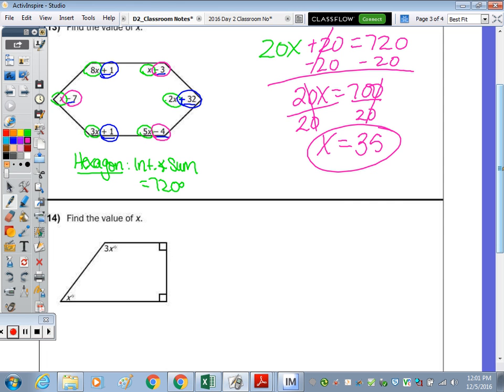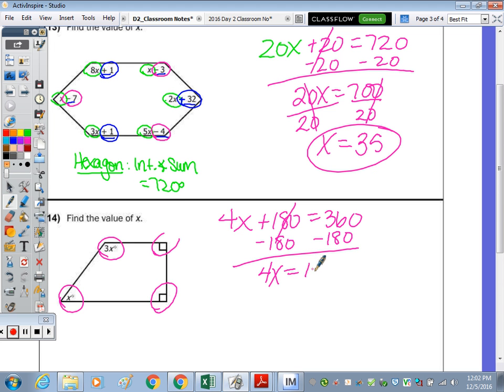And then the last one, find the value of X. What do all 4 of those angles add up to? It's a quadrilateral—360. So we have 3X and X, which is 4X. What's this angle measure? 90. So 90 and 90 is 180 equals 360. Subtract 180, divide by 4, and what do we get for X? Well, 4 times 4 is 16. Good. 45.